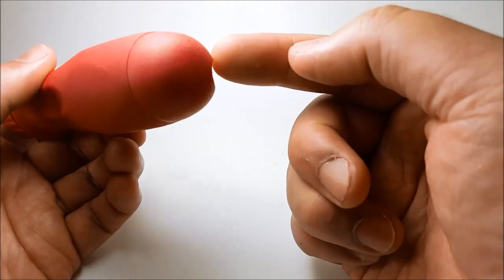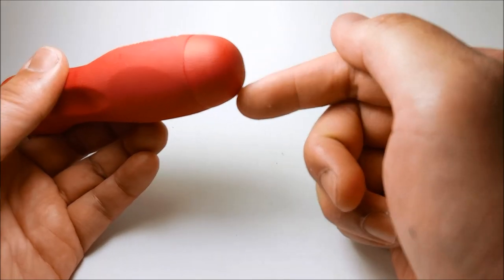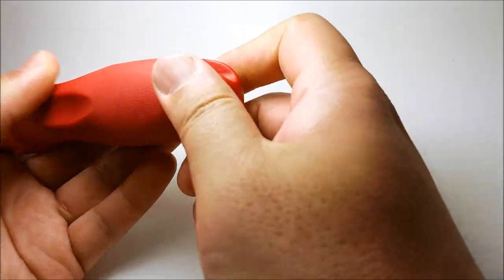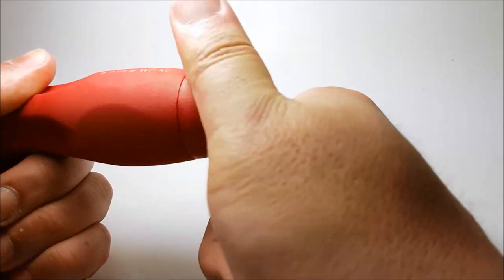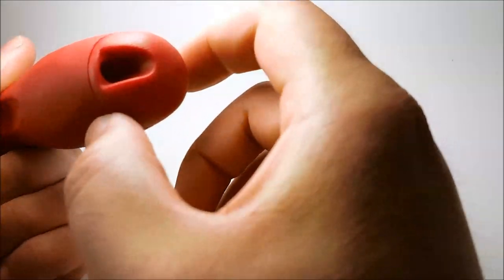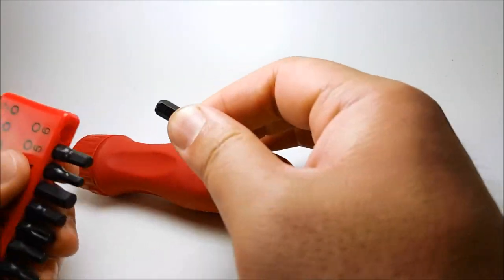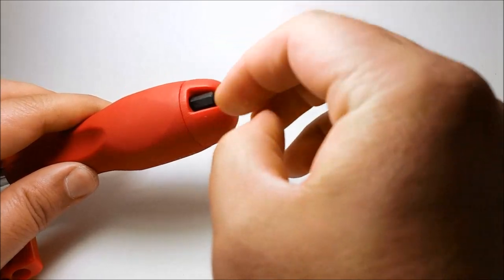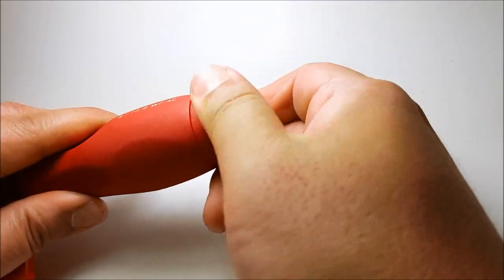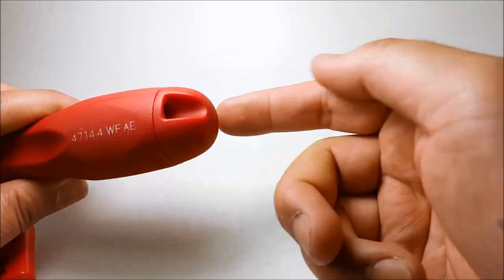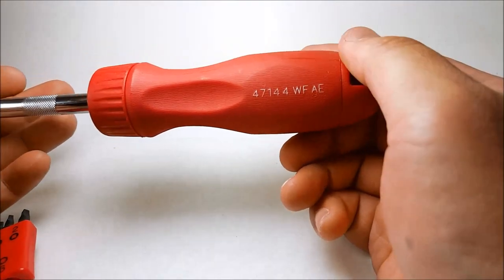It also has a storage compartment in the bottom section right here. This circle thing will rotate and you can put your bits in there. It holds six bits total. Let me just take one - you just slide it inside and twist it, and you put the next one on so it goes all the way around. You can put a total of six.